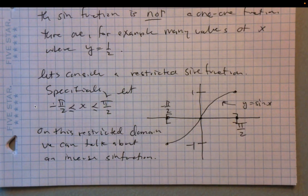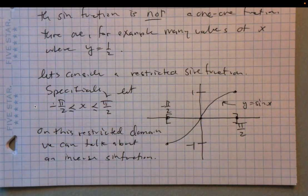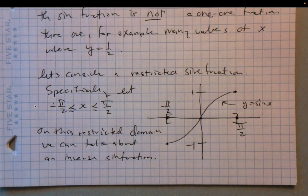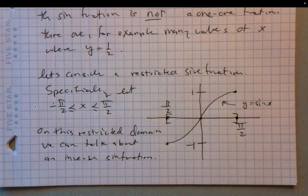You may be thinking this is very messy — what about the rest of the sine function? Well, the sine function is periodic, so it repeats itself, and it turns out this piece between negative π/2 and π/2 is all we really need to have a very effective inverse sine function.